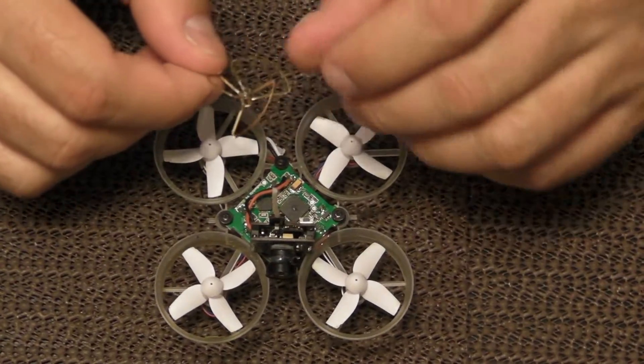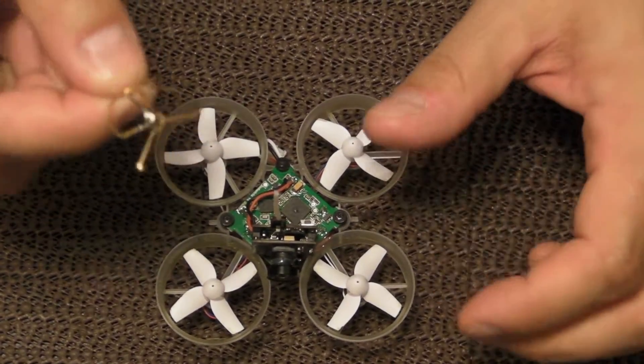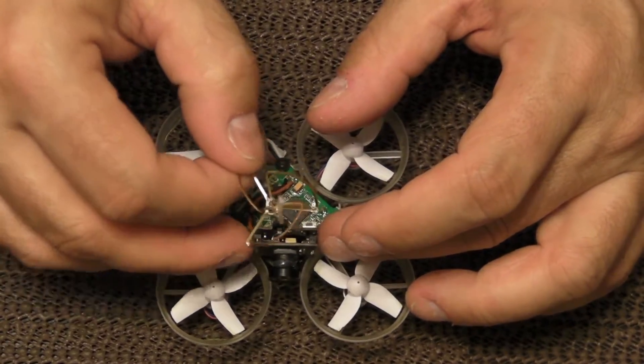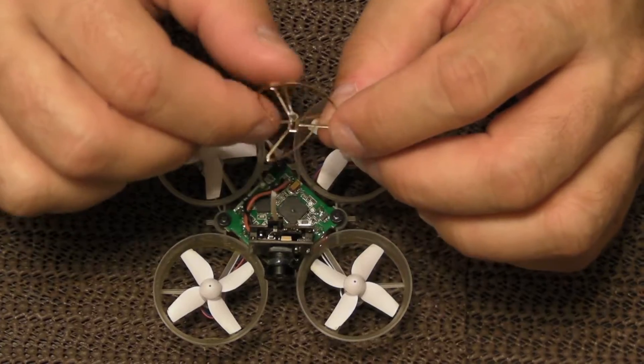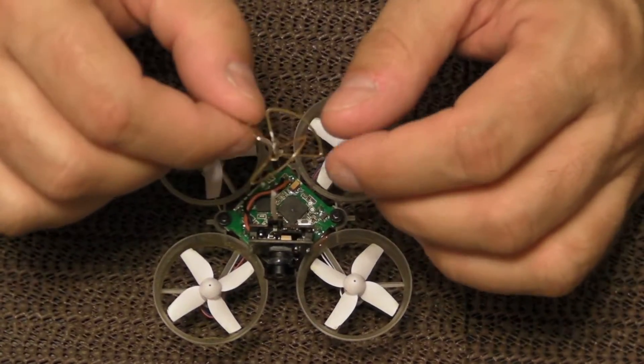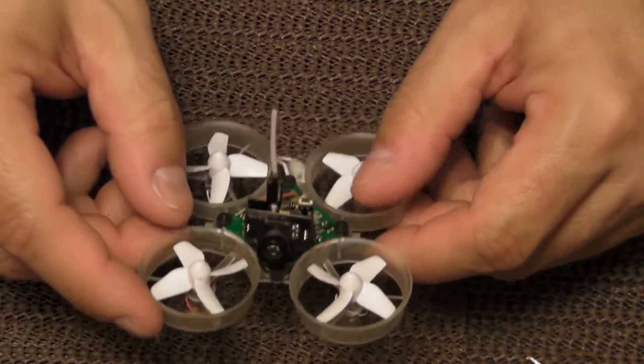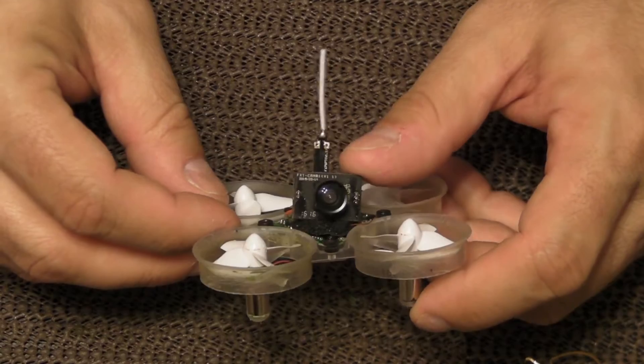I saw a lot of videos and websites of people making protection mounts, 3D printed covers to keep it protected. To be honest, that's a lot of unnecessary weight in my opinion. You want to keep this thing as light as possible for the fastest, longest flight times you can.